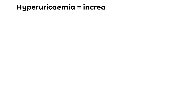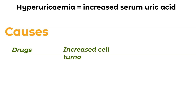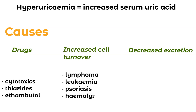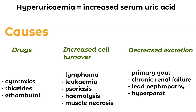Causes. So what causes hyperuricemia, or increased serum uric acid? Generally we can categorize them into three categories. The three causes are drugs, increased cell turnover, and also decreased secretion of uric acid. Under the category of drugs, certain medications can increase the amount of uric acid in an individual and thus cause gout. You may be more familiar with diuretics, such as thiazides. There are also other medications that can cause gout, so cytotoxics and ethambutol.